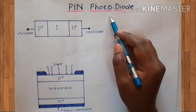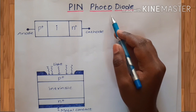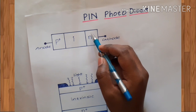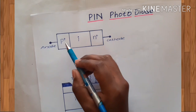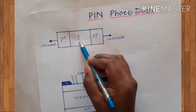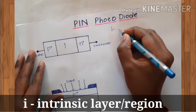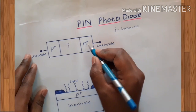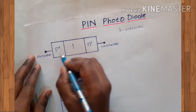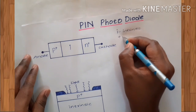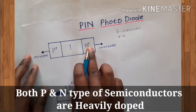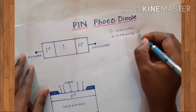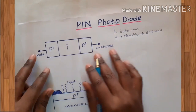Starting from its basic principle, construction, working, and applications. Looking at the word PIN: a PIN photodiode is a three-layer device in which P stands for P-type extrinsic semiconductor, I stands for intrinsic region or intrinsic layer, and N is nothing but N-type semiconductor. In this device structure you can observe a plus symbol on both P and N, which represents that both P and N type semiconductors are heavily doped, giving a very large number of charge carriers — electrons and holes.